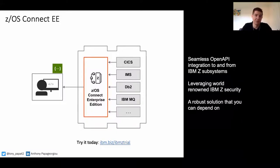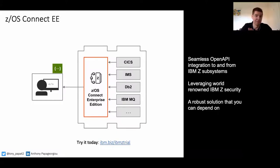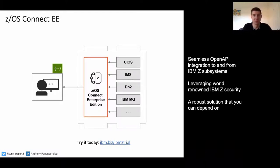The solution we came up with was ZOS Connect. We looked across the platform and said there are a number of ways of getting into various subsystems, but what we needed was a single way of doing this across the entire platform — a single place to manage it with seamless Open API access to all subsystems, leveraging the security on Z with all the qualities of service you expect from the platform. We also allow programs on the platform to call out to APIs, making that more straightforward from COBOL or PL/1.